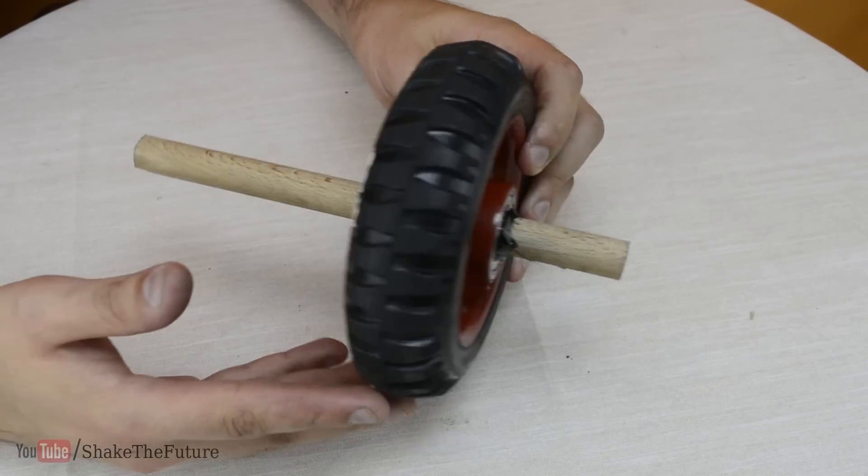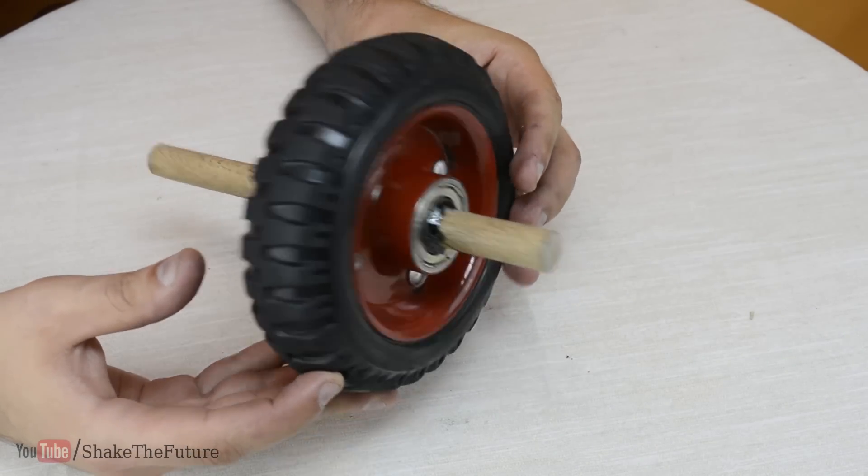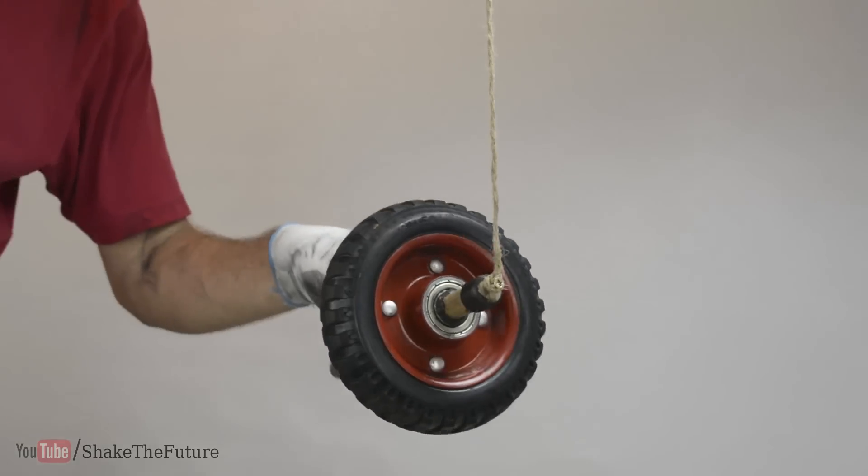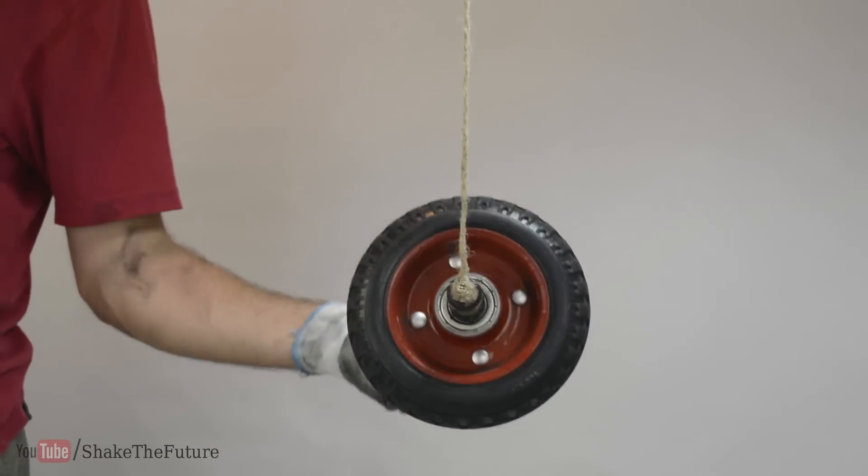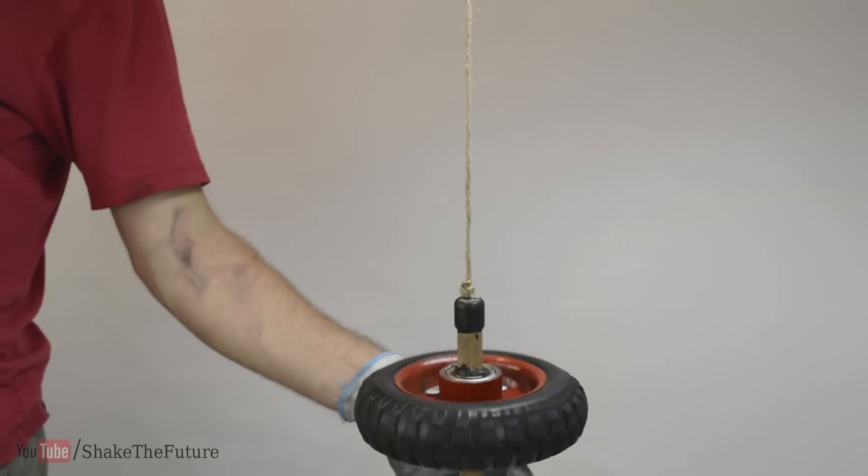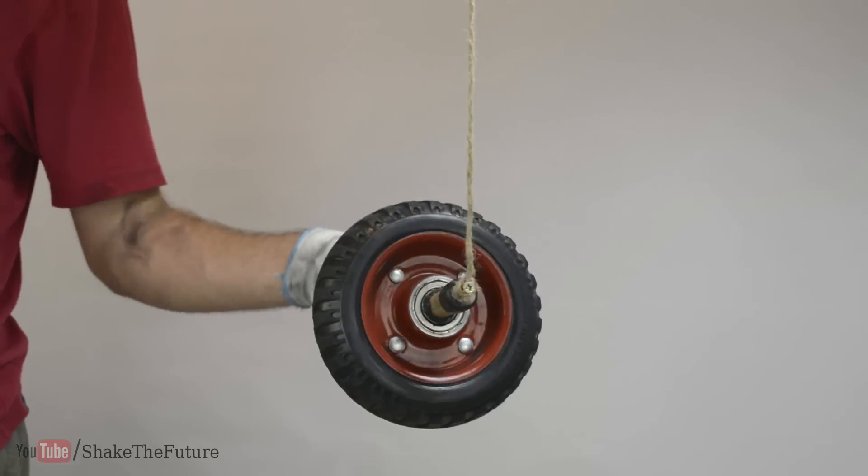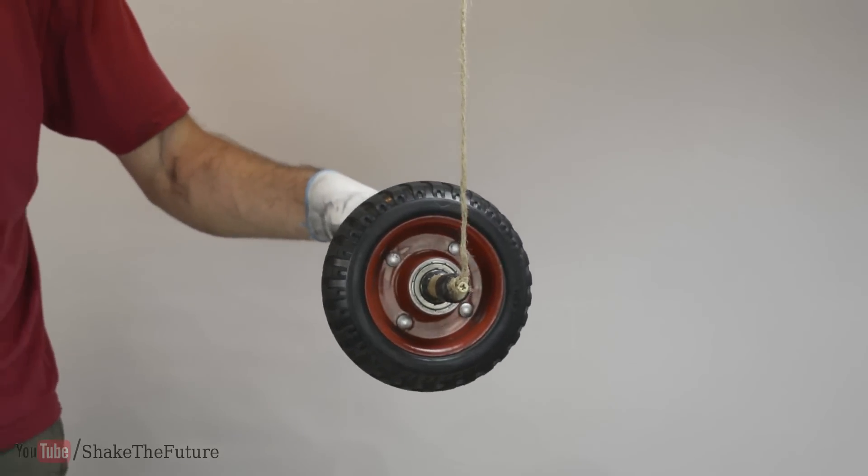Well that's pretty much it. Let's try it out. I used a screw to hang the wheel. As you can see, the wheel is hanging down as you would expect. What will happen if I spin it and let it go?